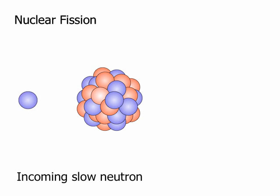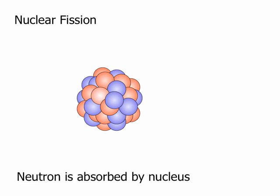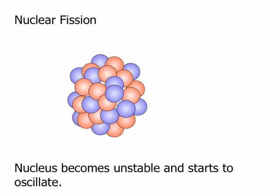Nuclear fission: a small neutron hits a uranium-235 nucleus and makes it even more unstable. It starts to wobble - we say it starts to oscillate - and that means something's going to happen to it.